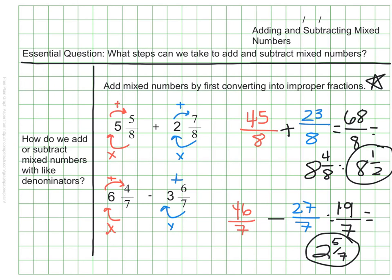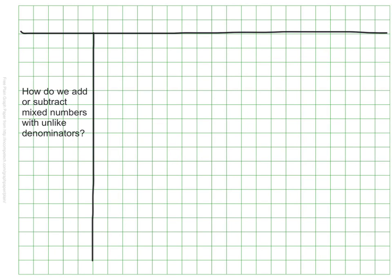Let's continue with adding and subtracting mixed numbers, but this time we'll look at the denominators that are not the same, unlike denominators. So in the margin we're going to write, how do we add or subtract mixed numbers with unlike denominators? The process here is basically the same, but with one extra step.